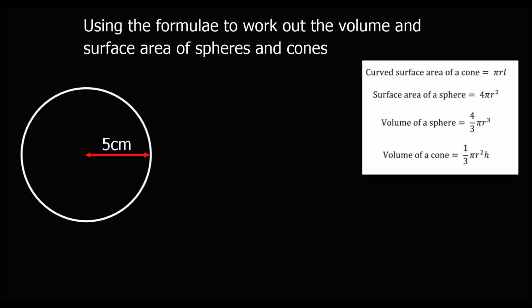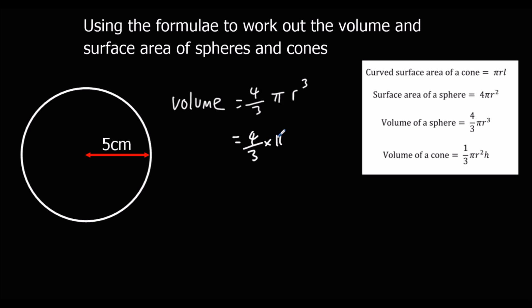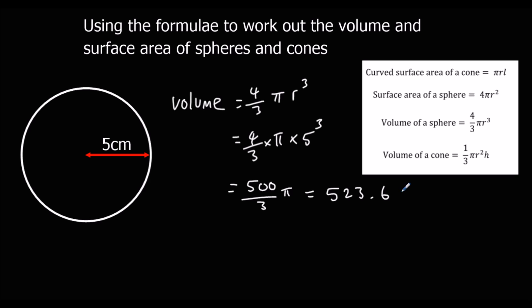So here I've got a sphere. If I want to work out the volume, I take the formula: 4 over 3 times pi r cubed. In this case r is 5, so it's 4 over 3 times pi times 5 cubed. Typing that into the calculator gives us 500 over 3 pi, or as a decimal 523.6 centimeters cubed to 1dp.